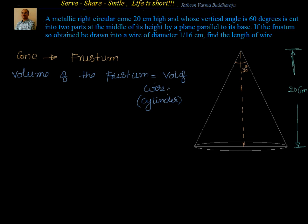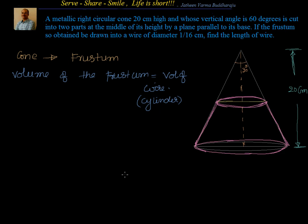We know the formula for the volume of the cylinder, so let's write it down and find the length of the wire. Before that, let me put down the frustum. We have divided the cone into two parts — this is the middle of the height and a plane parallel to the base. Whatever we have in pink color is nothing but the frustum of the cone. We don't need the part above it. We want to find out R1 and R2 to proceed with the volume of the frustum.